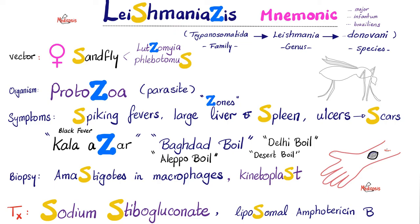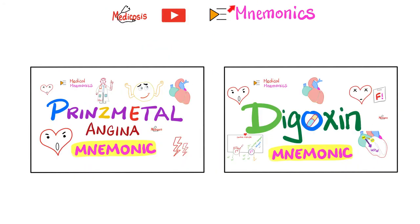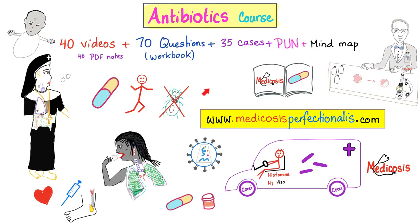How do you treat Leishmaniasis? Sodium stibogluconate or liposomal amphotericin B. That's it for today. Don't forget to watch my Prinzmetal Angina mnemonic and Digoxin. If you want to learn more about amphotericin B, antibacterials, antivirals, and antifungals, download my antibiotics course at medicosisperfectionitis.com.